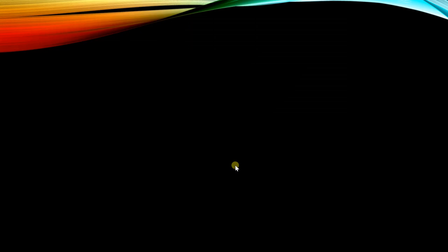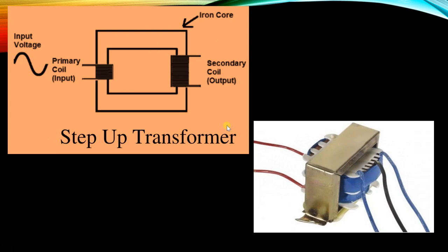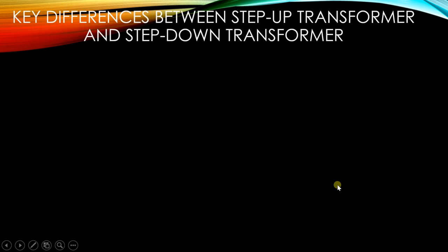The step-up transformer is opposite to the step-down transformer. On the primary side, there are fewer windings compared to the secondary winding — N2 > N1. More voltage is produced on the secondary side, which is why it is called a step-up transformer. The commercial figure of the step-up transformer is also shown.